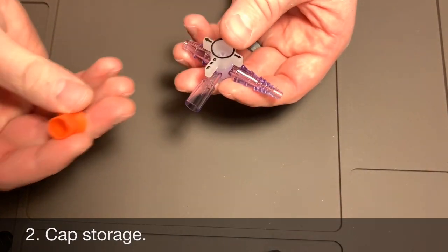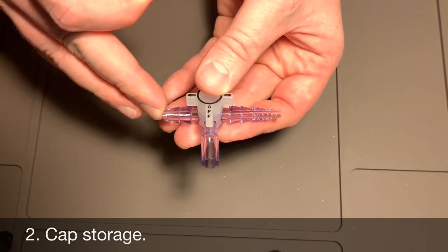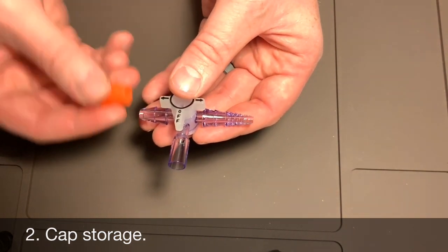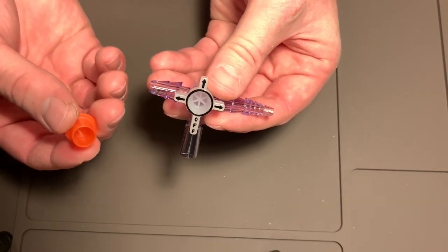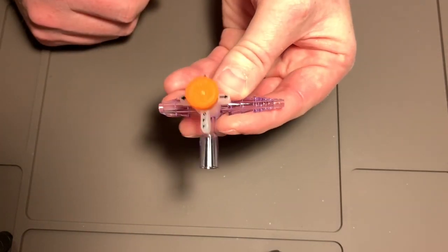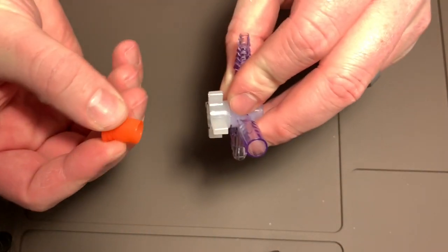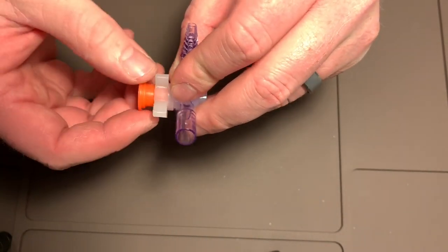Tip number two is whenever you take this cap off to put your medications in, you end up losing this cap a lot. Well, this actually sits right inside your dial right there. So that way you don't have to worry about losing it or dropping it or misplacing it.